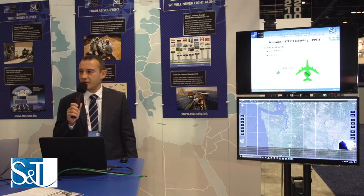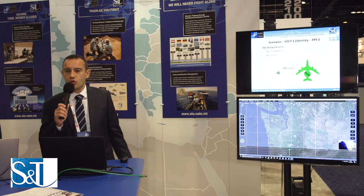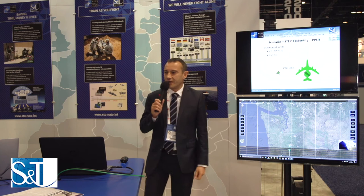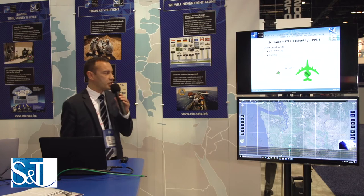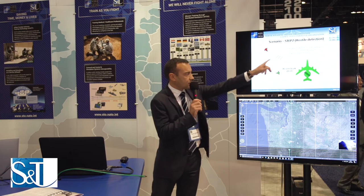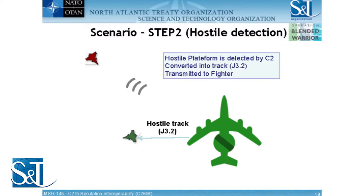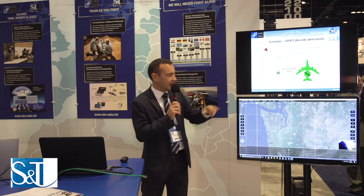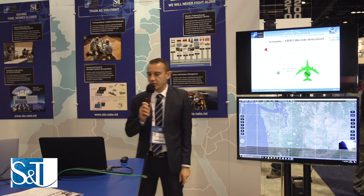One unit is an AWACS and the other is a fighter — and this is a French TDL demonstration, so the fighter is a Rafale. The first step is for these two units to exchange their positions. The second step: the AWACS has plenty of sensors and is able to detect a hostile threat. It then informs the fighter, whose radar is less performant than the AWACS, that there is a threat in the area. We use the G3.2 TDL message for this.